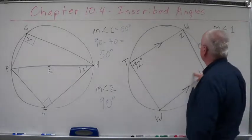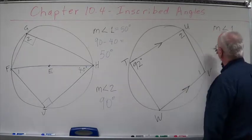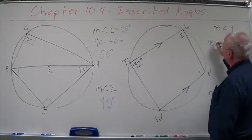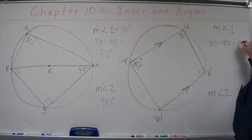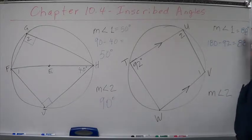So let's find this one, and then we can find this one. Opposite angles are supplementary. So 180 minus 92 equals, I think that looks like 88. This equals 88.